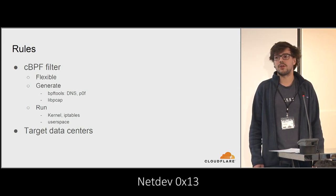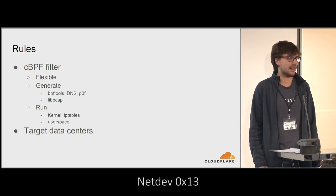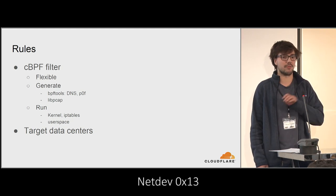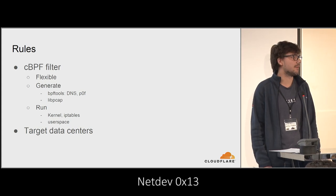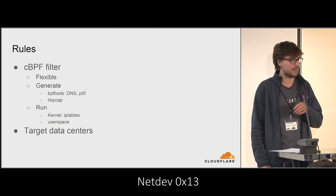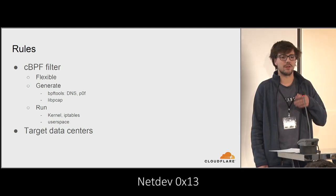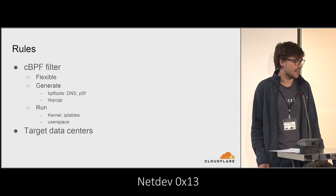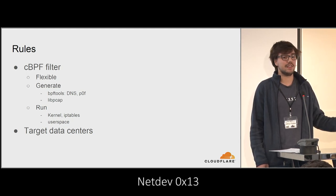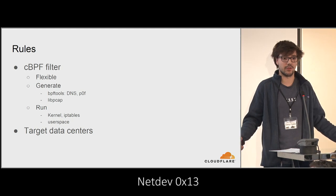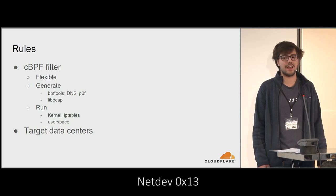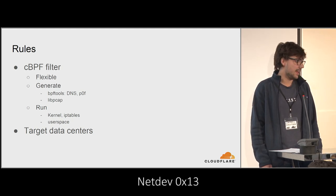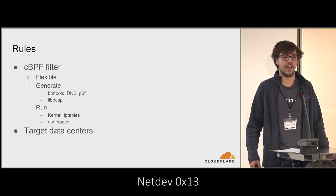There are lots of tools to generate classic BPF. We have our own bpf-tools project on GitHub that lets us generate CBPF matching DNS queries — for example, any DNS query matching foo.example.com. Poff is a small DSL for describing IP and TCP header options and their order, because attackers often use the same software with the same header bits. Libpcap and tcpdump also generate classic BPF. We can run them in the kernel with SO_attach_filter, in iptables with xt_bpf, and in user space — lots of languages have CBPF interpreters.